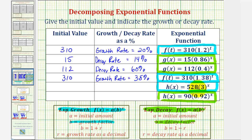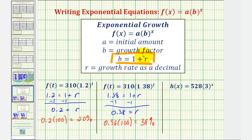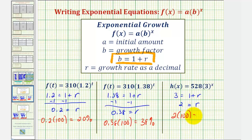We have another exponential growth function. The initial value is 528, and the growth factor or base is three. We have three equals one plus R, so subtracting one on both sides gives us R equals two. Two times 100 equals 200, so our growth rate as a percentage is 200 percent.